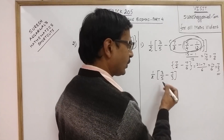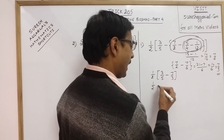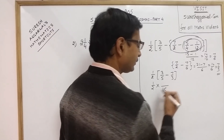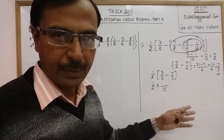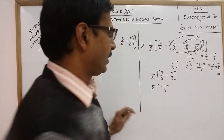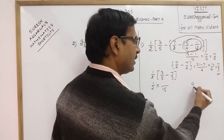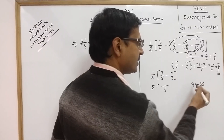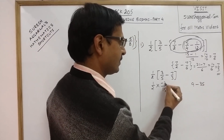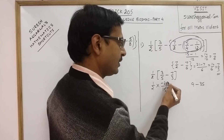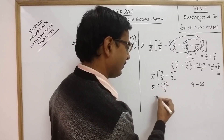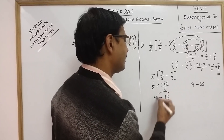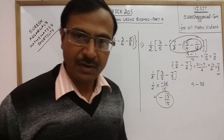Now we have 3/5 minus 7/3. Since 5 and 3 are co-prime numbers, their LCM is their product, which is 15. Cross-multiplying gives 9 minus 35, which is minus 26. The 2 cancels with 26, so the final result is minus 13/15, which is the final answer of this simplification problem.